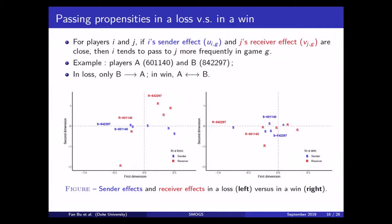So, this player A is represented by his code name 601140. This player B is represented by his code name 842297. Their ID codes are both plotted on those plots. So, on the left panel, in the loss, we see that player B's blue point is close to player A's red point. And that suggests there's a very strong passing link from player B to player A. But the opposite cannot be said for those two players. So, we are sort of seeing that their passing behavior is imbalanced, is one-sided in this lost game.